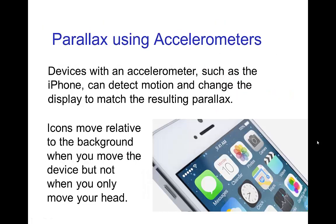Another kind of glasses-free 3D effect uses a display with an accelerometer to detect motion — the iPhone works this way. When you move the phone, the icons seem to move relative to the background as if they are closer to the viewer, giving a sense of depth. However, this only occurs when you move the phone; if you hold the phone still and move your head, there's no parallax and no 3D effect.